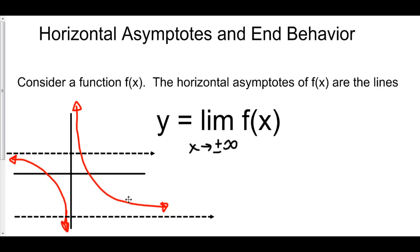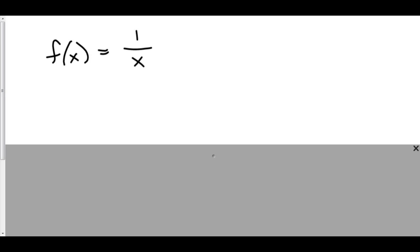Furthermore, we see that this function is approaching this bottom horizontal line as x goes to positive infinity. To find this line, we would take the limit as x goes to positive infinity. Let's take a look at some examples. Here's a classic: f of x equals 1 over x.